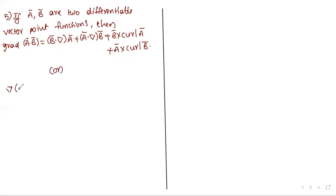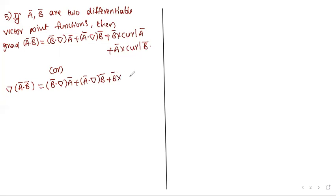In operator notation: ∇(Ā·B̄) equals B̄·∇Ā plus Ā·∇B̄ plus B̄ cross (del cross Ā) plus Ā cross (del cross B̄).